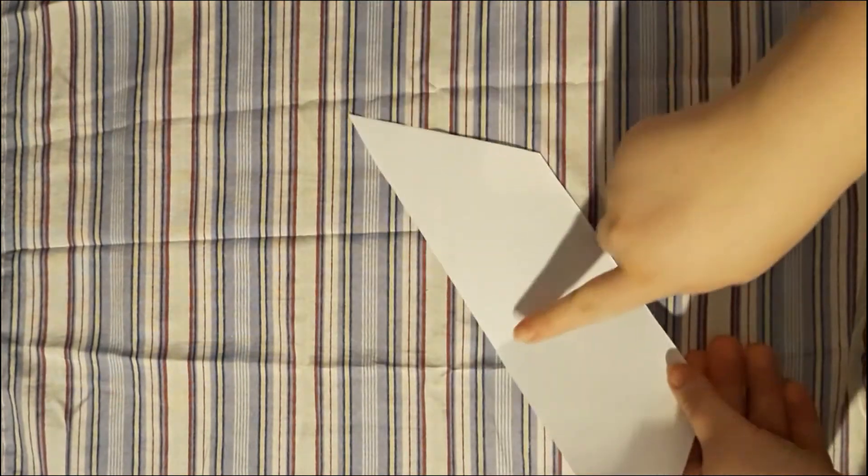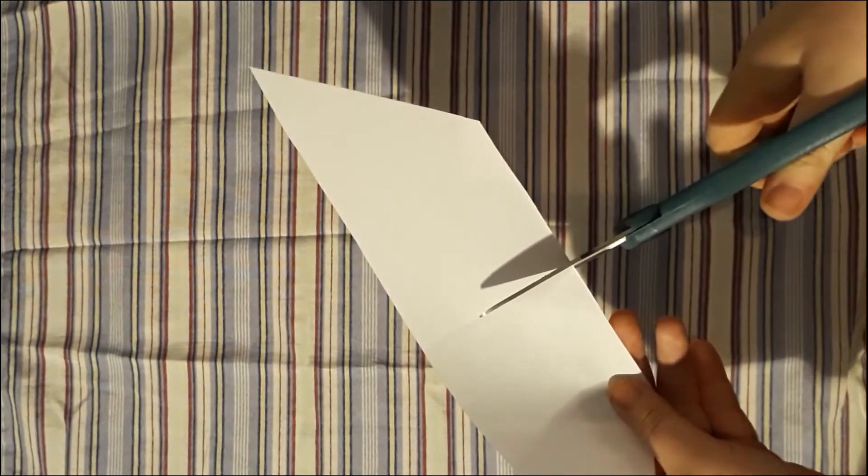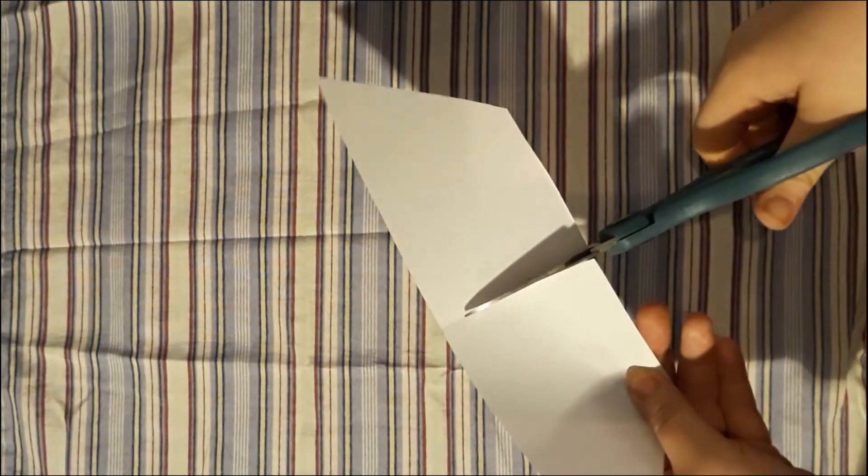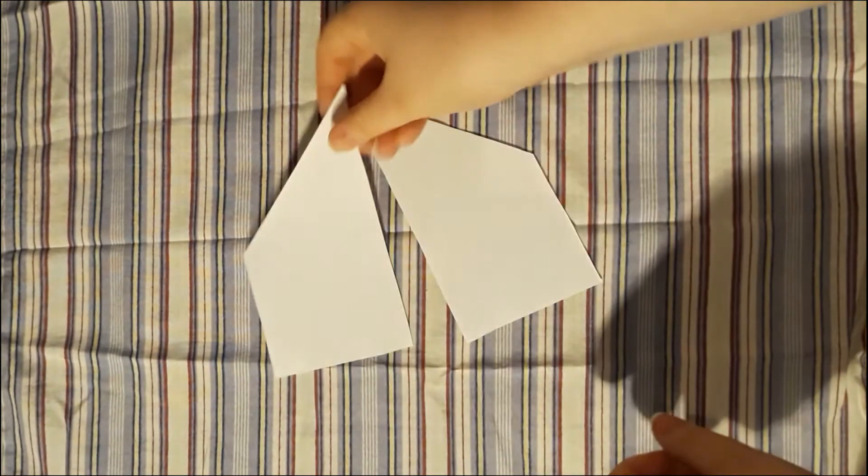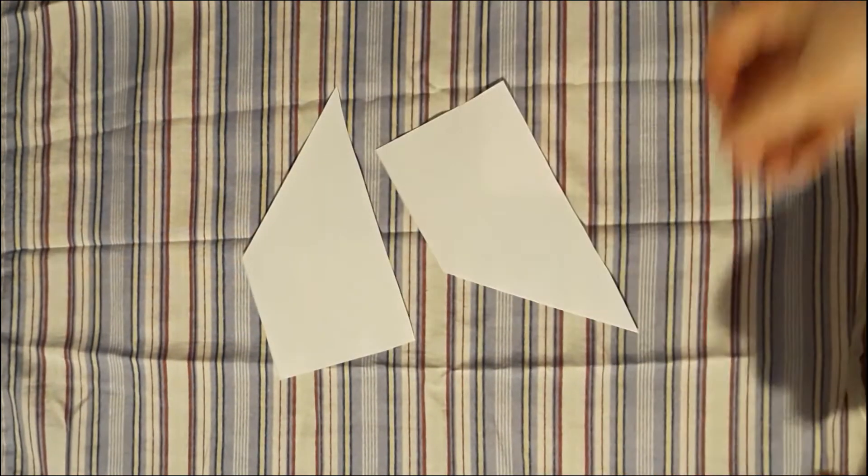Now take your scissors and cut along the crease made on the trapezoid. Now you should have two trapezoids with right angles.